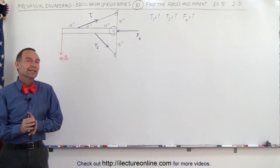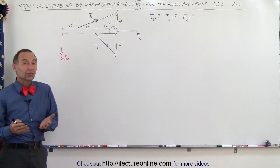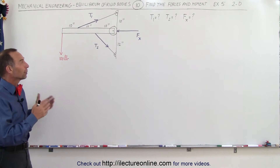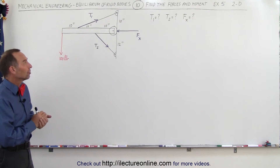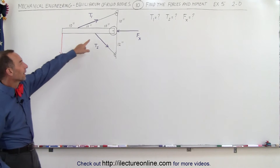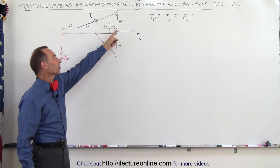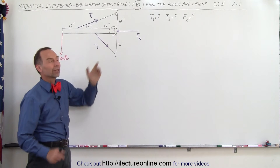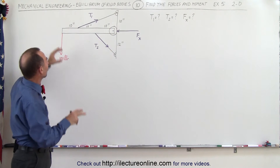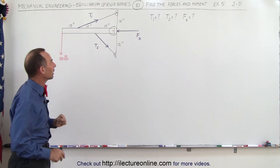Welcome to iLecture Online. Here we have another example of how to calculate forces, tensions, and moments of a particular situation. In this case there won't be any moments because there's nothing attached to the wall between the beam and the wall itself. There's a wheel there taking the force of the beam being pulled against the wall and held in place.